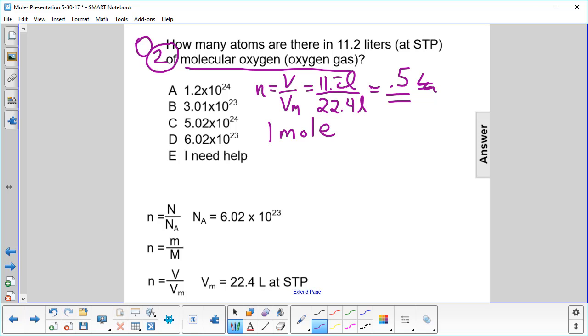So how many atoms is that? One mole is 6.02 times 10 to the 23rd, so D. So the trick here is you have to realize that molecular oxygen has two oxygen atoms for every molecule.